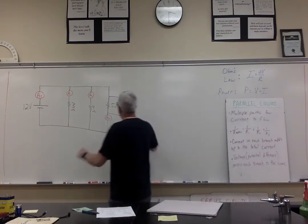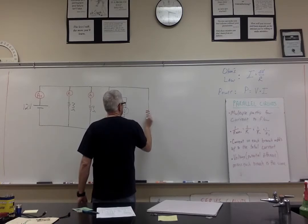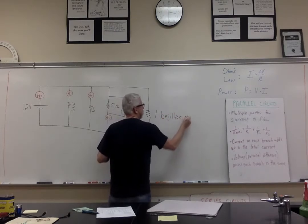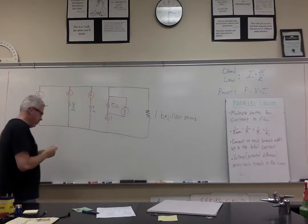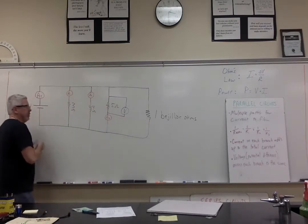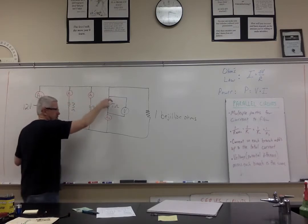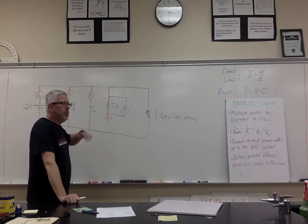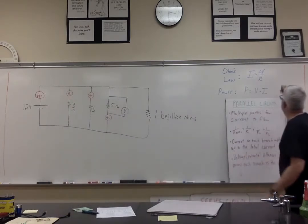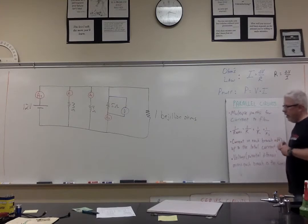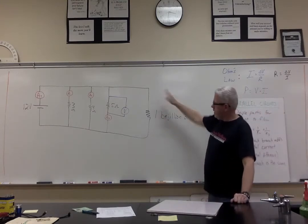An extreme example would be if I added another branch with a resistor of one bajillion ohms. Would much current pass through it? No — a tiny little bit of current would pass through it. When I think about the total current as being the sum of all branches, even a little bit of extra current in the whole circuit means my resistance is a little bit lower. I can look at that by rearranging Ohm's law: resistance equals voltage divided by current. If my current gets a little bit bigger and I've got the same voltage, my resistance has to get just a little bit smaller. Any additional branch is going to end up giving you less resistance.